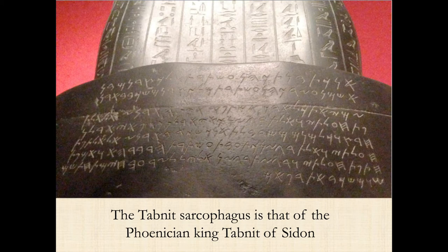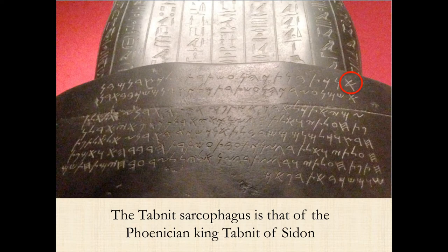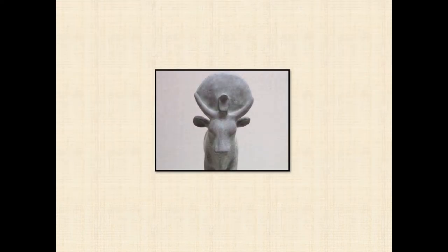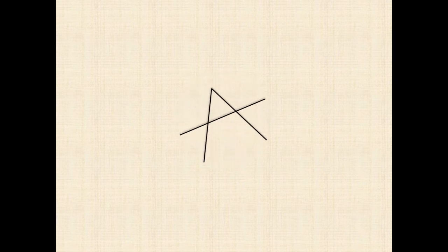Here is an actual Phoenician inscription — the Tabnit sarcophagus, made for the Phoenician king Tabnit of Sidon. At the top we have Egyptian hieroglyphs, and at the bottom we have Phoenician. Right over there we can see Aleph. Now, Aleph and Beth — the first two letters of the Phoenician alphabet — come directly from the goddess Hathor. Rising out of this basic shape, we have the Greek alpha and the Latin A. And Beth, meaning house, is the box within which the falcon sits — that's also her name. So A and B, the first letters of our alphabet — the word 'alphabet' itself — come directly from the goddess Hathor.